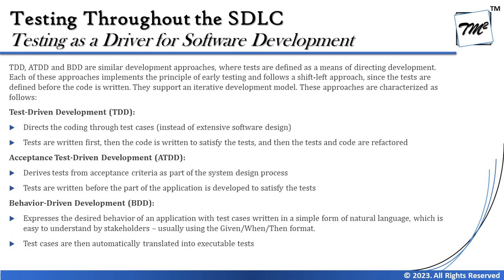The next approach is ATDD — acceptance test driven development. ATDD derives tests from acceptance criteria as part of the system design process, and tests are written before the part of the application is developed to satisfy the test. The difference here is that the tests are not technically written; instead, test cases are derived from the acceptance criteria. In agile, for a user story to be called done or completed, it should meet the defined acceptance criteria. These tests are also useful for UAT, as they are driven from a customer or business perspective.